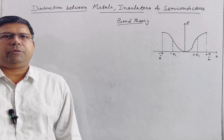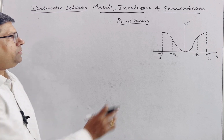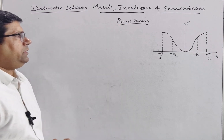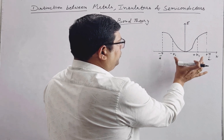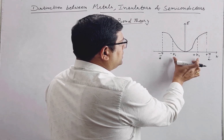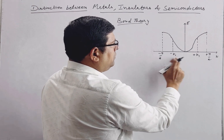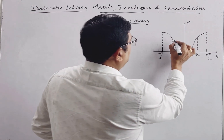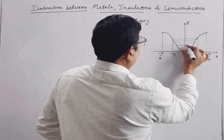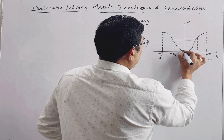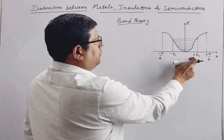Now we will see the distinction between metals, insulators and semiconductors on the basis of band theory. Let us consider a particular energy band which is filled up to some level. Let this be filled up to level K1, from minus K1 to plus K1. So this energy band is filled up to K1.